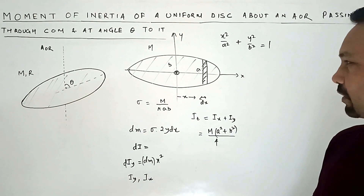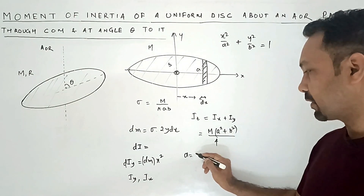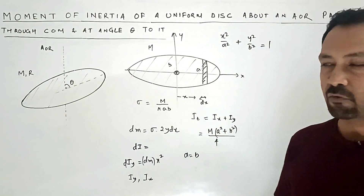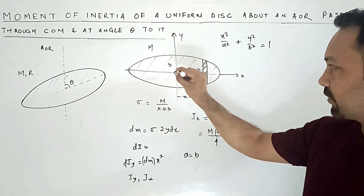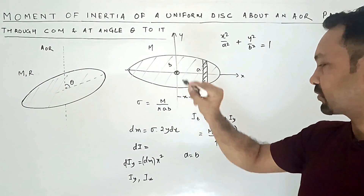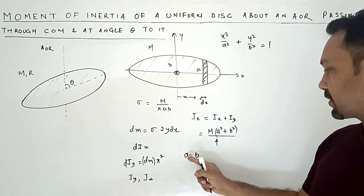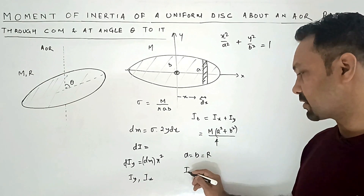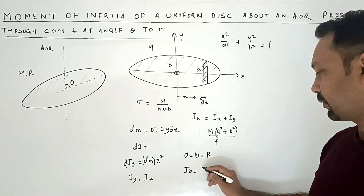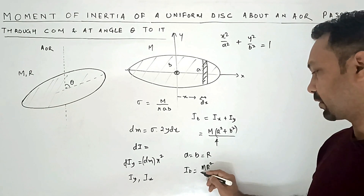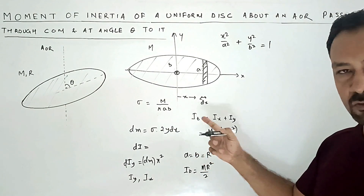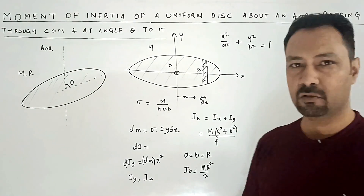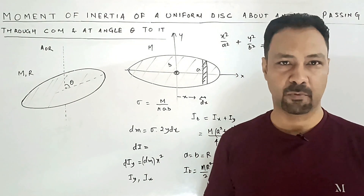Here is a way to remember this: if a equals b, the ellipse becomes a circular disk, and you know that for a circular disk the moment of inertia about this axis is Mr²/2. So if you put a = b = r, then Iz = Mr²/2, which confirms the formula. That is how you should remember the moment of inertia of an elliptical disk.